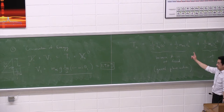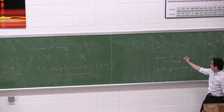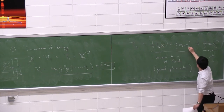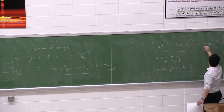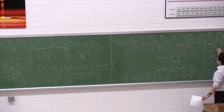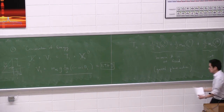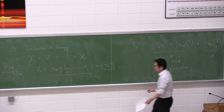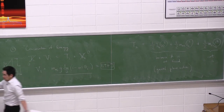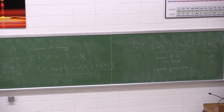Let's do a quick inventory of all our unknowns right now. Our unknowns are ω, VG, and VC. Using this conservation of energy equation alone, I really need two more equations to make a set of three equations and three unknowns.